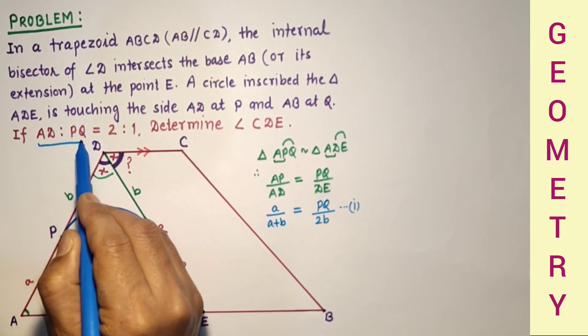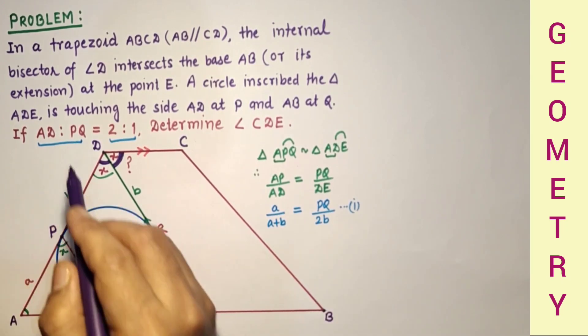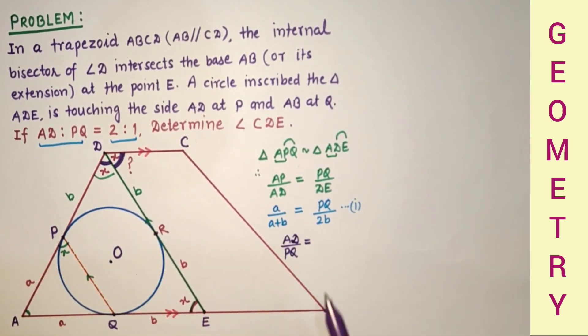And the other is we are given that AD is to PQ is equal to 2 is to 1. So AD by PQ equals 2 by 1, which means PQ is equal to AD by 2.